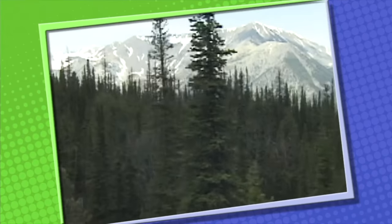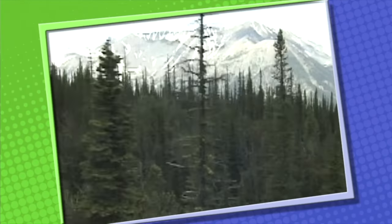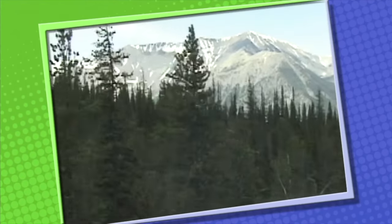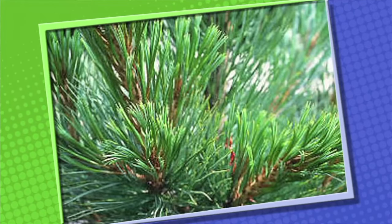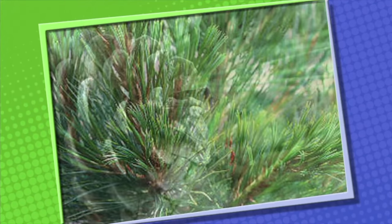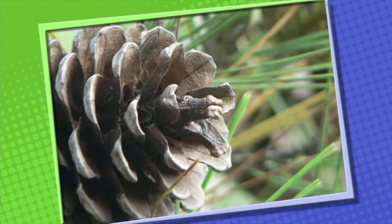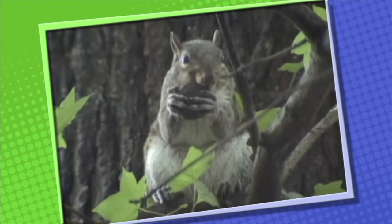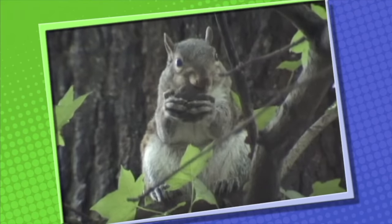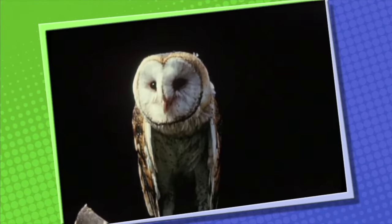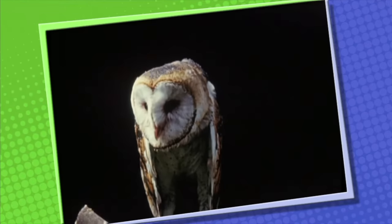Trees found in the coniferous forests, like firs and spruce, have dark green needle-shaped leaves that stay green all year. The dark green color of spruce and fir needles helps the foliage absorb the maximum heat from the sun and begin photosynthesis as early as possible. The word coniferous comes from the word cones, because coniferous trees have cones that contain seeds. In coniferous forests, you will find small animals like mice, squirrels, and beavers. The branches of the trees offer shelter to a wide variety of birds, including owls.